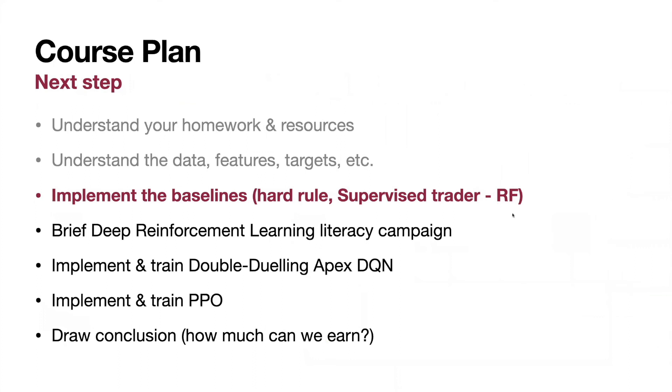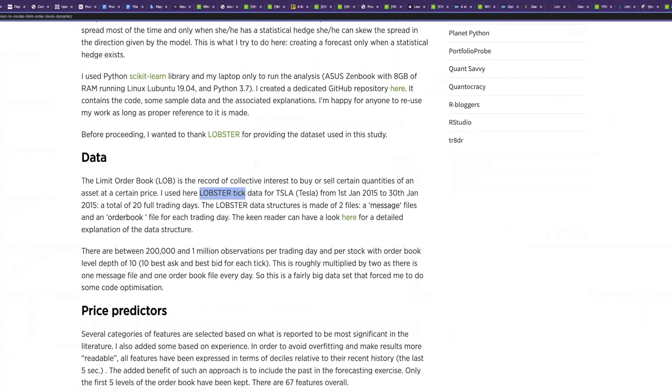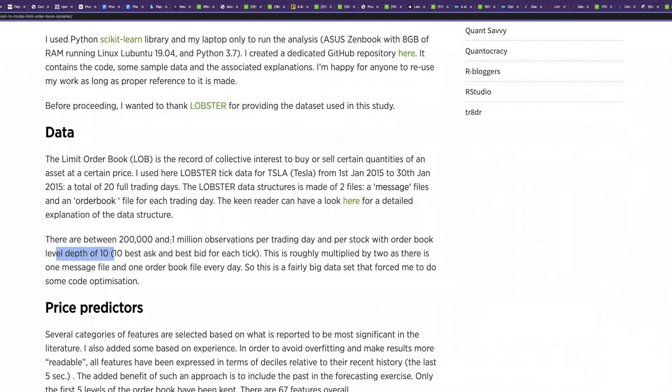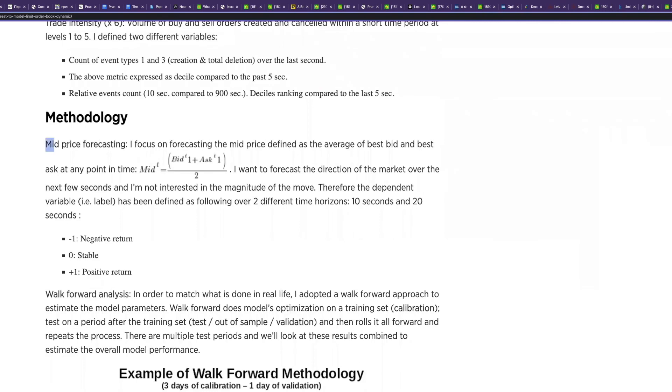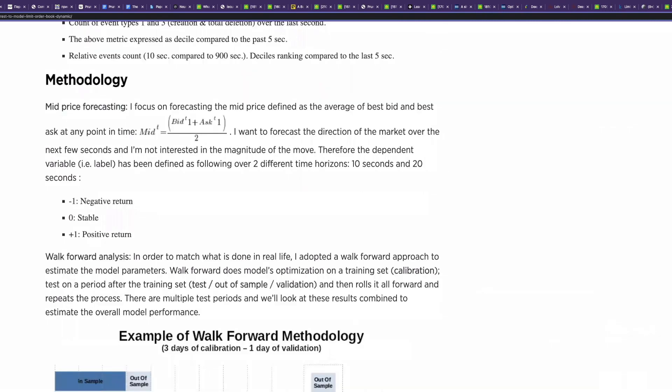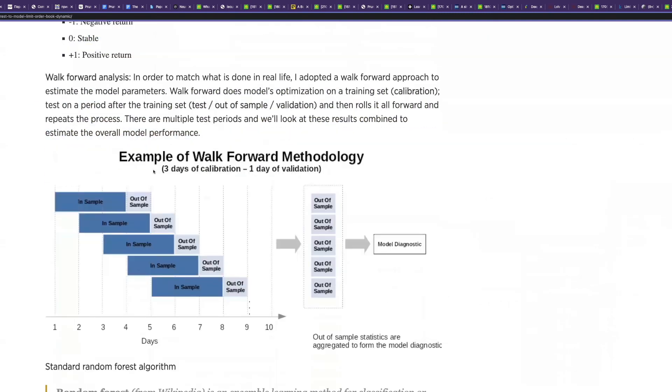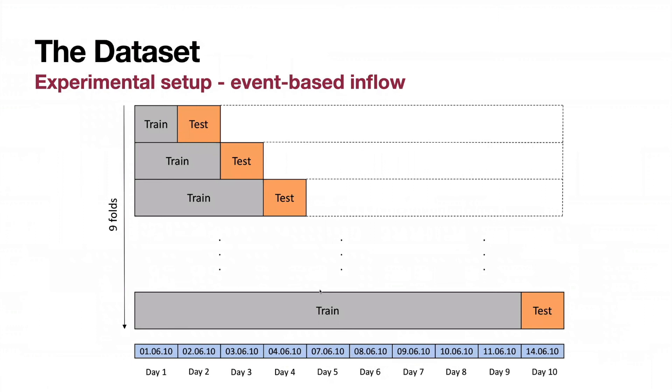For random forest, I will show you the article and the starter code. Here is the article. I'm going over it right now. It uses LOBSTER data for Tesla. The depth of order book is 10, same as ours. Calculated direction of change of a price, mid-price spread, and other things. You will have different features. He was predicting mid-price. He used two different time horizons at 10 seconds and at 20 seconds. Also, he used the walk-forward methodology exactly the same as your data has been split.